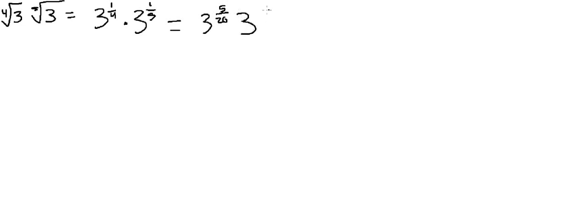So the first one is going to be 3 to the 5 over 20, and the second one is going to be 3 to the 4 over 20. Now when we add those, we're going to get 3 to the 9 over 20.